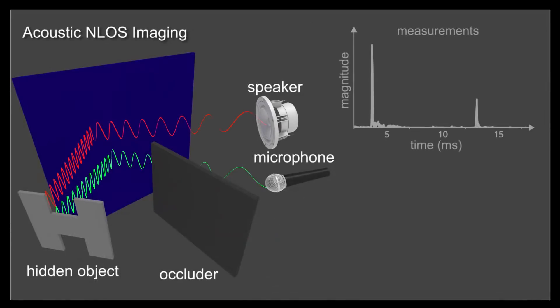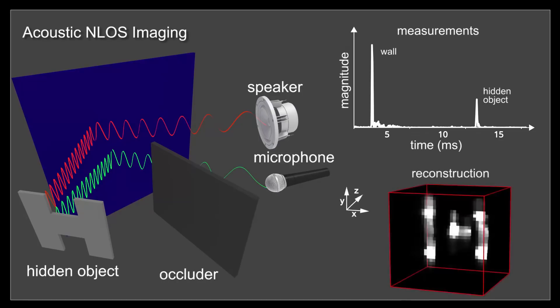We introduce acoustic non-line-of-sight imaging, in which modulated acoustic signals from a speaker propagate to a wall, reflect off a hidden object, and return to a microphone. By scanning or using an array of speakers and microphones, the 3D geometry of the hidden object can be recovered.